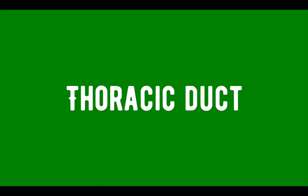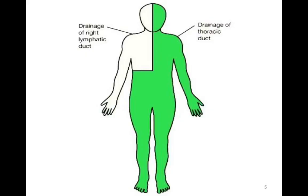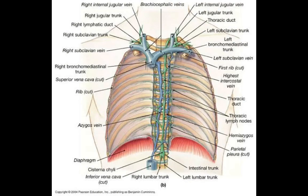The thoracic duct is an elongated common lymphatic trunk which conveys the chyle and most of the lymph of the body into the bloodstream. It drains the lymphatics from the whole body except the right side of the head and neck, right upper limb, right lung, right thoracic wall, and the right half of the heart.